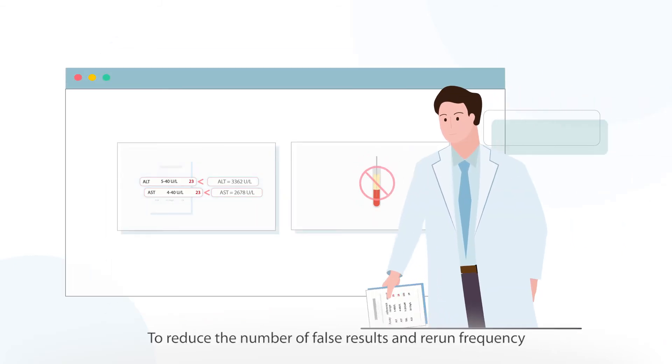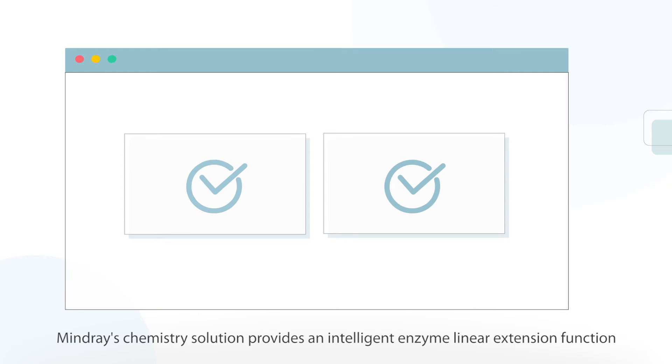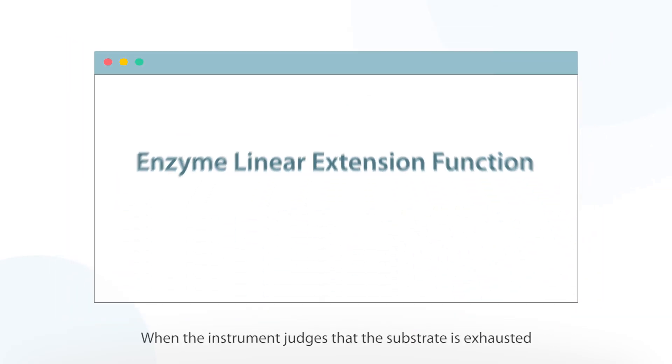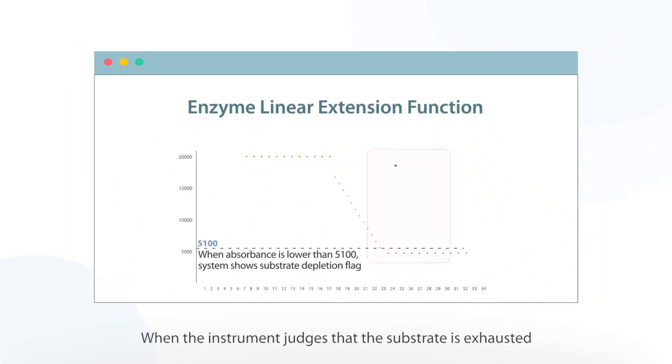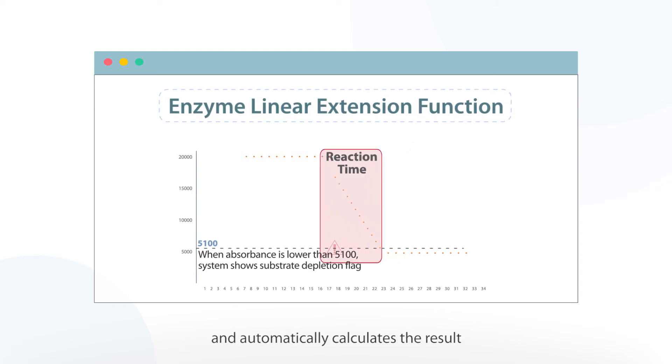To reduce the number of false results and rerun frequency, MindRay's chemistry solution provides an intelligent enzyme linear extension function. When the instrument judges that the substrate is exhausted, it starts the enzyme linear extension function and automatically calculates the result using the absorbance point in the linear change.